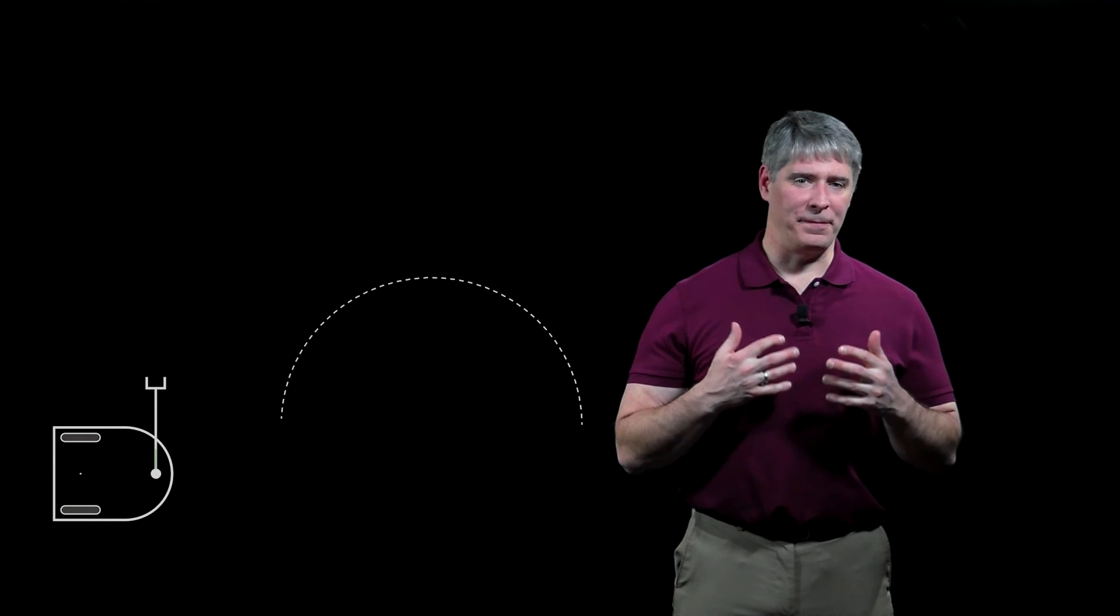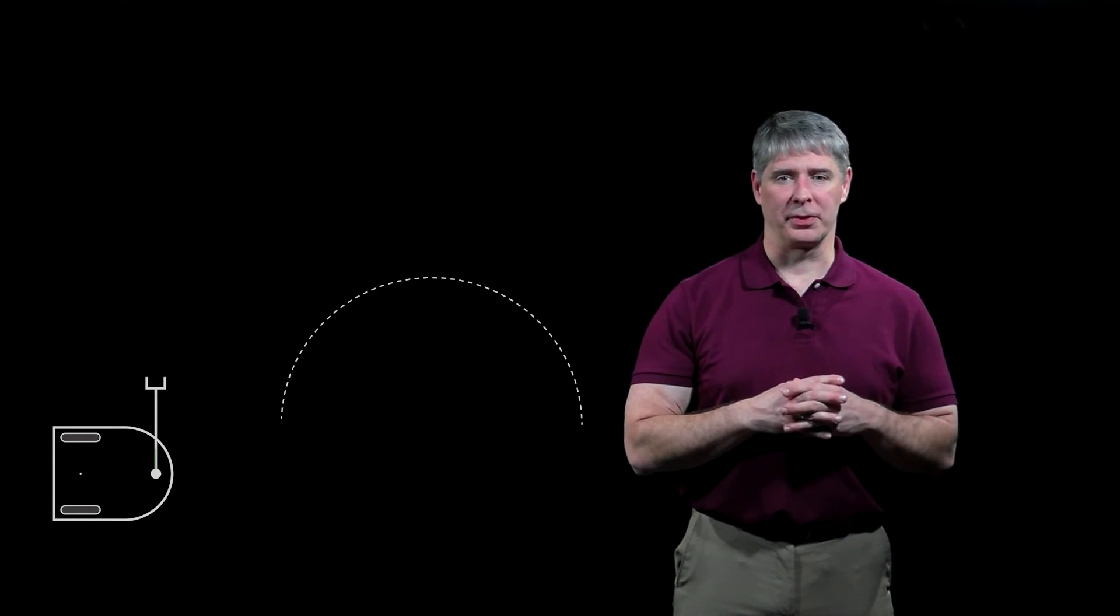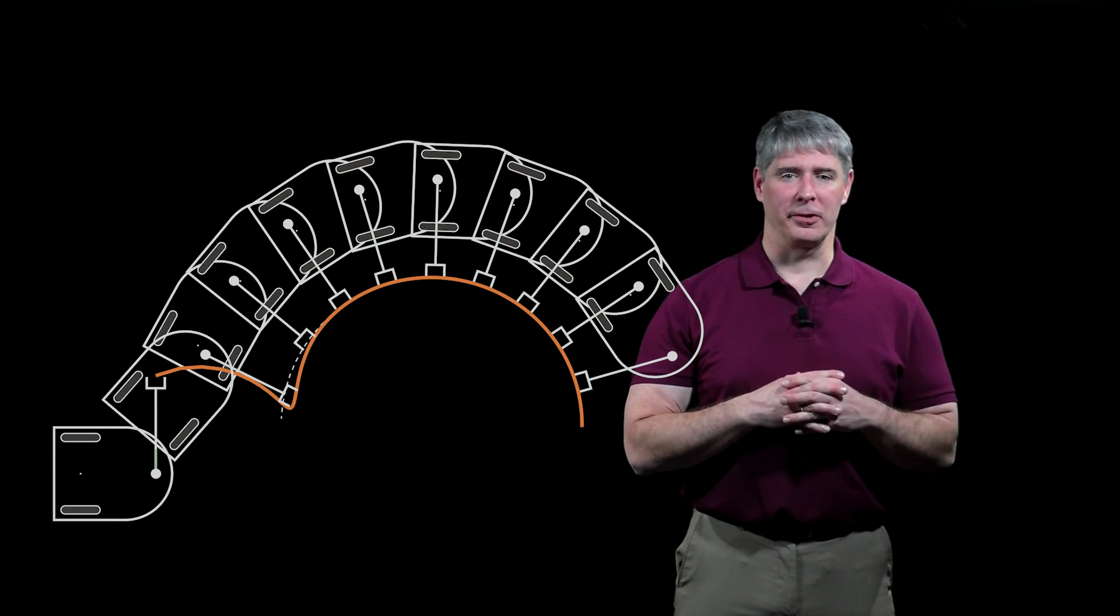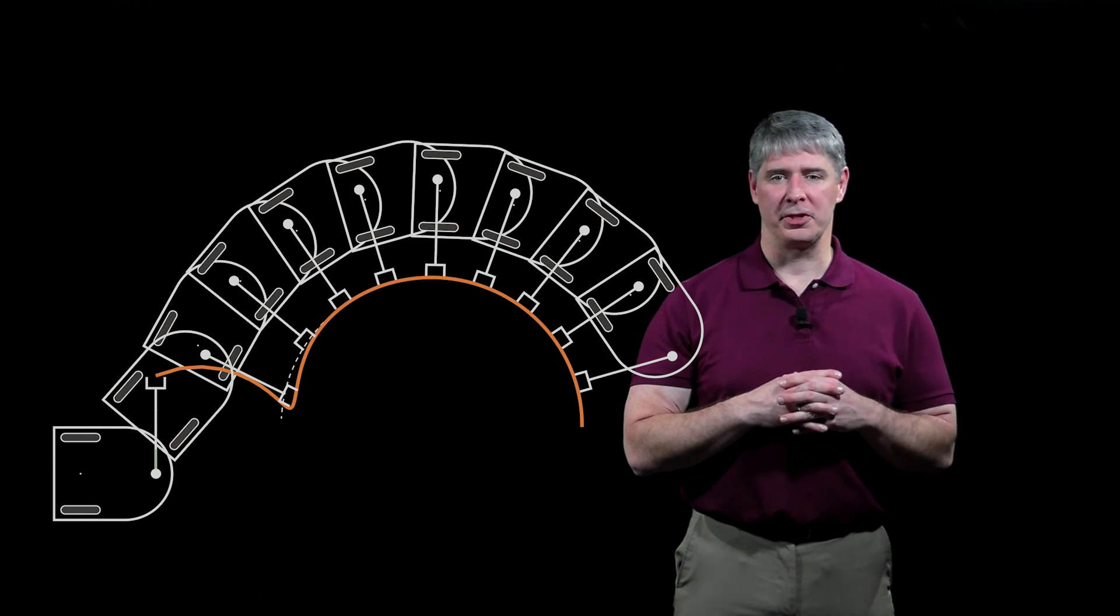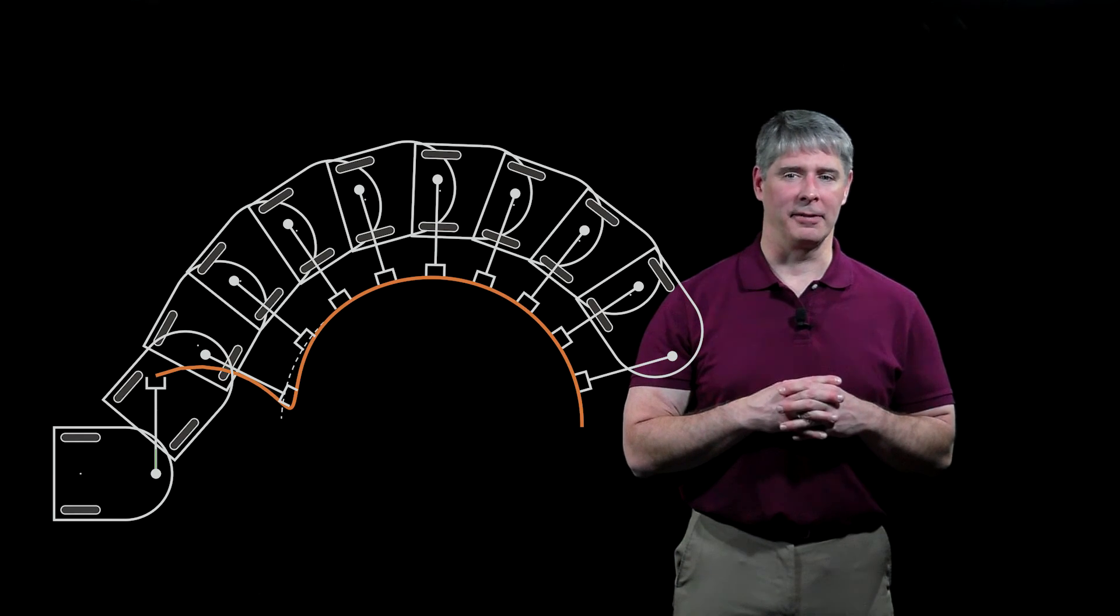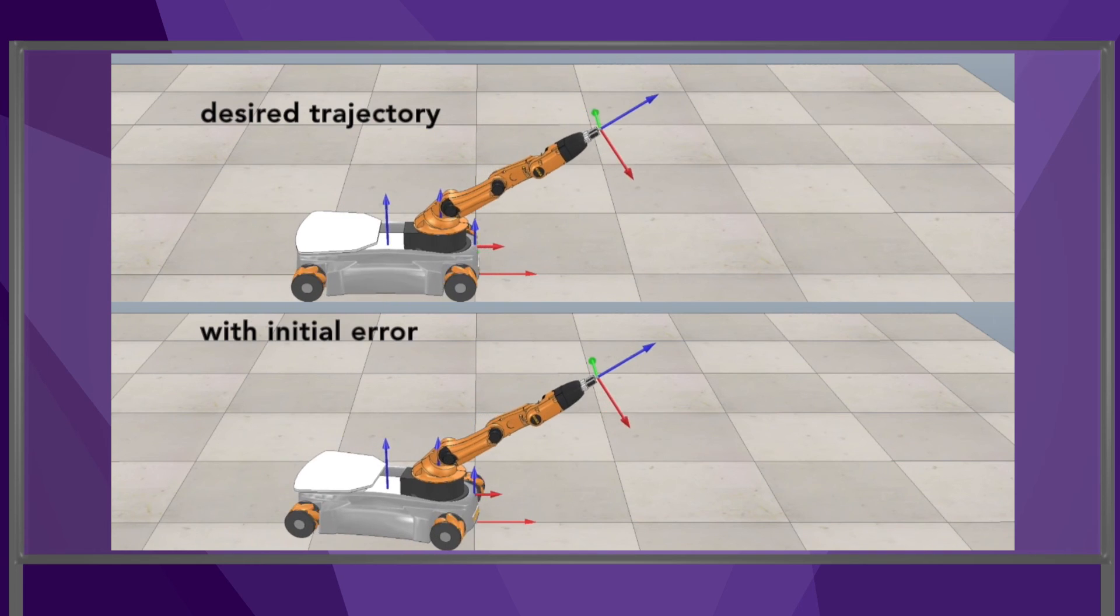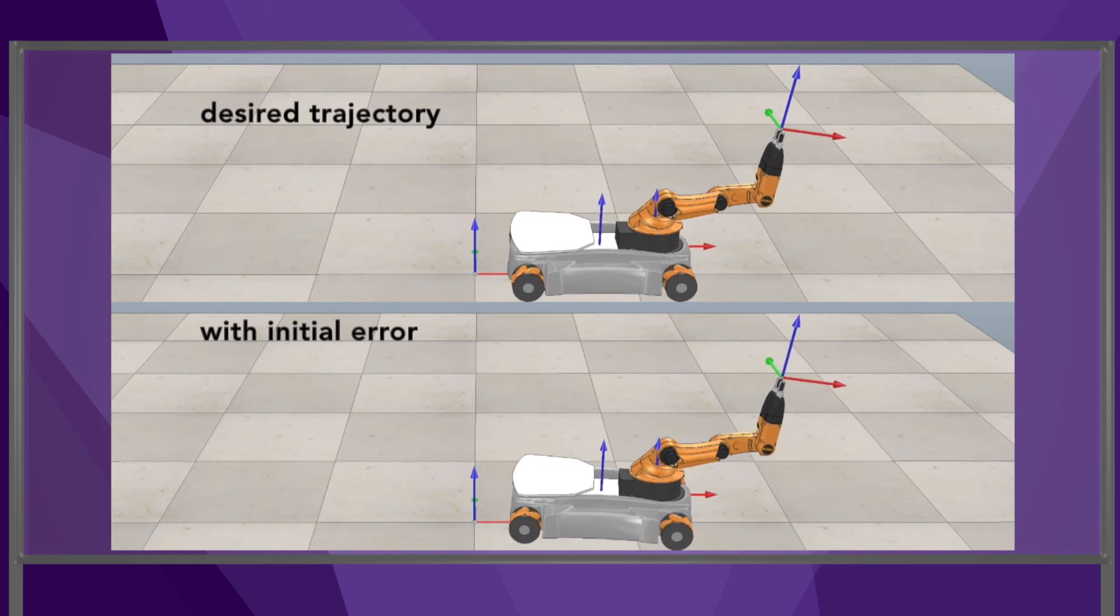The task space feedforward plus PI controller drives the robot along the path shown here. The end effector error converges to zero after a small overshoot due to the choice of the integral gain. We used the same control law for the robot with four wheel speeds and five joint speeds at the beginning of this video.